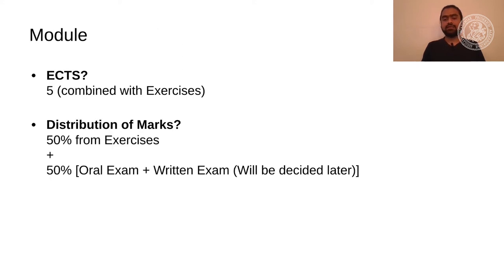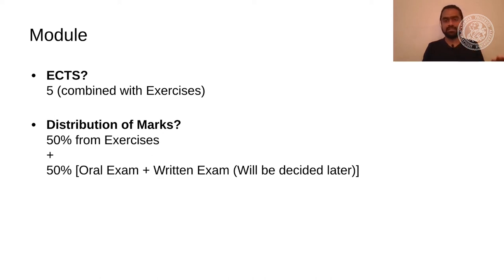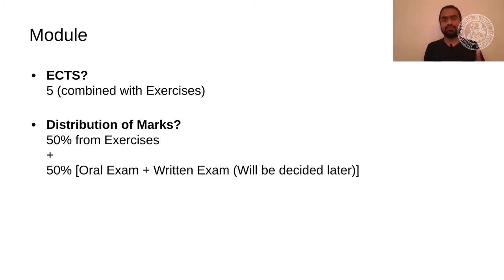About the module: the module consists of the exercises and lectures in combination, and together they fetch you five ECTS credits. Remember that for getting five ECTS you need to clear both the exercises and the lectures. To qualify for the oral exam you need a minimum of 50 points from the exercises. The final grade will be given with 50% equal weight for exercises and for the oral or written exam. So if you get 90 out of 100 points in exercises, that will be converted to 45 points for the exercise proportion.